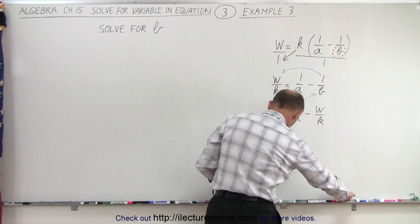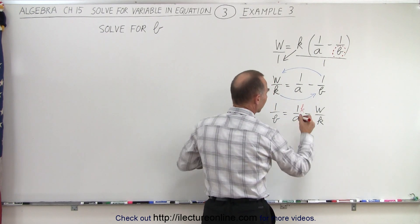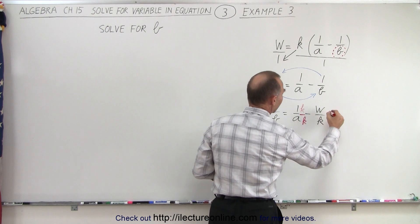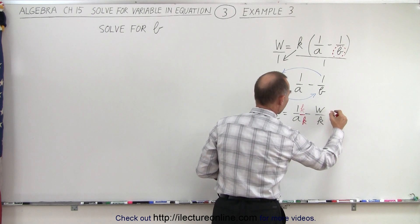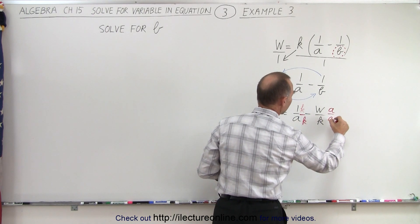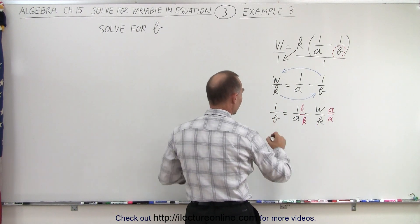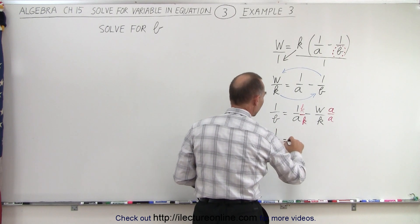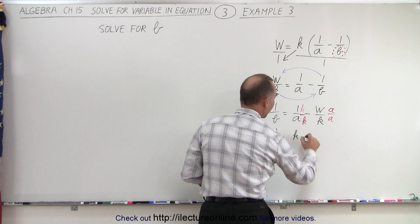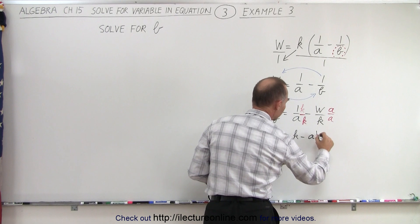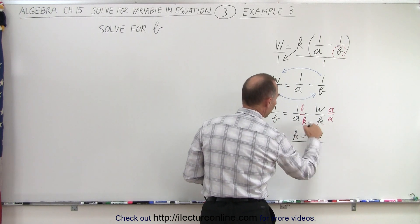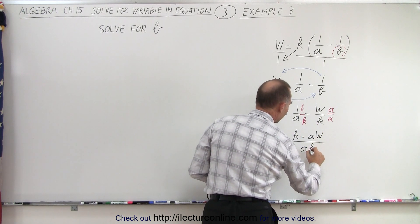and this is going to be a over a. That way we have a common denominator of a times k, and so this can now be written as 1 over b is equal to k minus a times w, all divided by the common denominator of a times k.